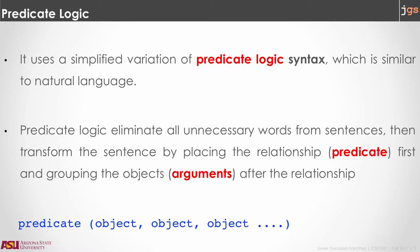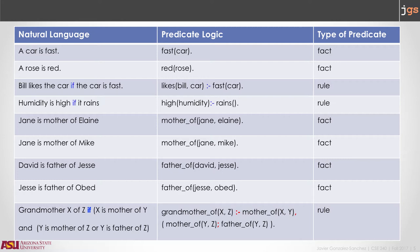And then, inside parentheses, it is going to group the items, objects, or elements that are involved in that relationship. Let me show you some examples. The first column in this table is showing you some sentences in English. In the second column, you can see the equivalent of that sentence, but in predicate logic.